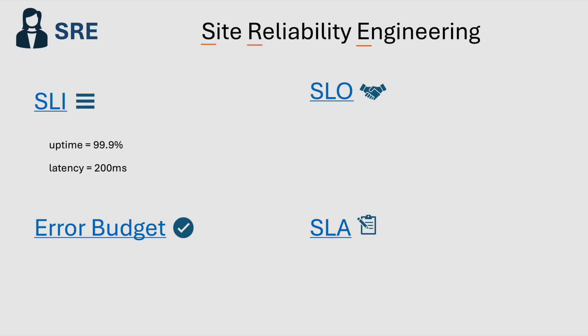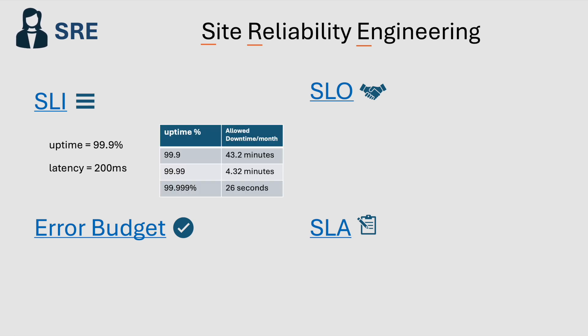These metrics are called SLIs or Service Level Indicators. Uptime measures the percentage of time a service is available — the more nines, the higher the availability of the service. Latency measures the time it takes to process requests — the lower the latency, the better. We will have different SLIs for a service to measure its quality by their values.